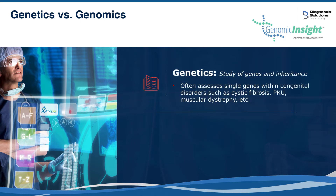Genetics is the study of genes and inheritance. We see genetic disorders very clearly, such as cystic fibrosis and PKU, muscular dystrophy, and other conditions like sickle cell anemia. These are conditions that occur from very precise mutations that cause a severe pathology.